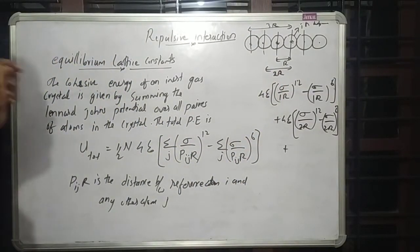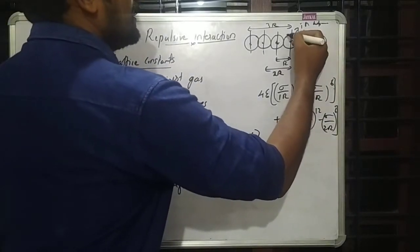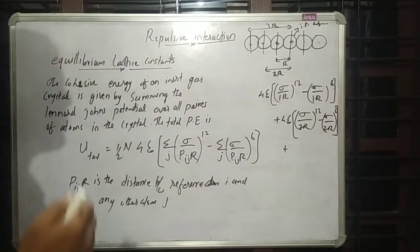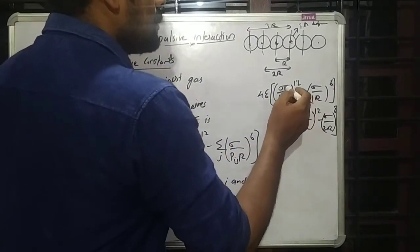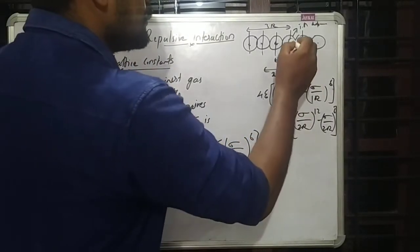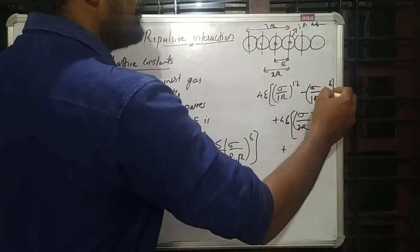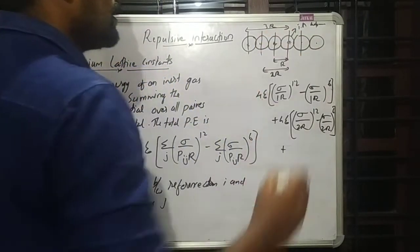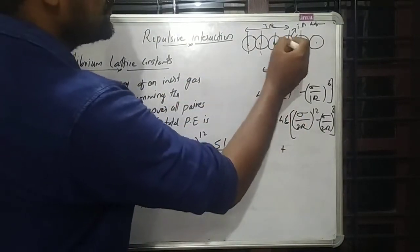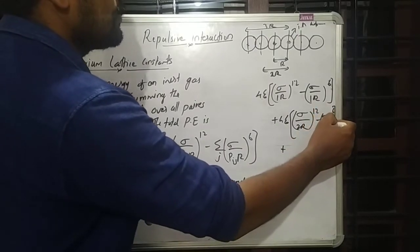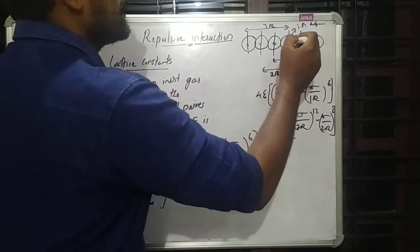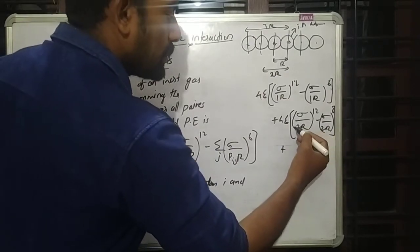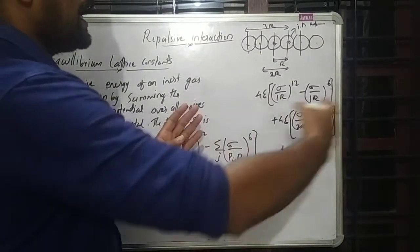When considering the interaction energy, we take one atom as the reference i-th atom. The Lennard-Jones potential for that atom with its neighbor at distance 1R is 4 epsilon times sigma over 1R raised to 12 minus sigma over 1R raised to 6. We then add the interaction energy between that atom and the next at distance 2R, then 3R, and so on, summing all interaction energies.